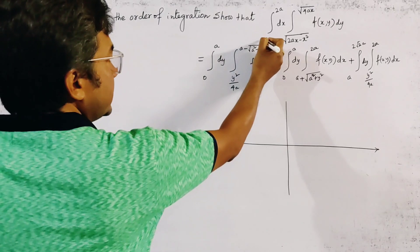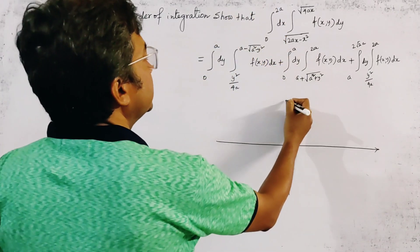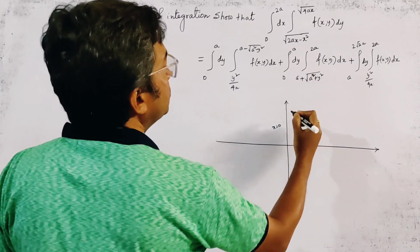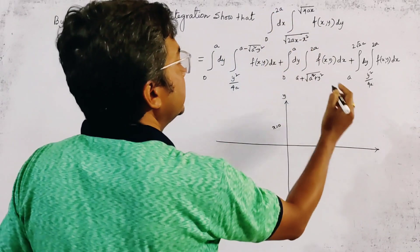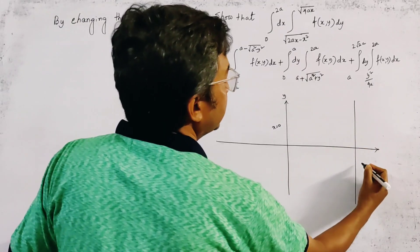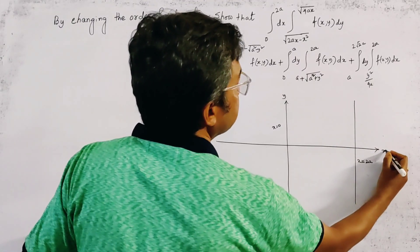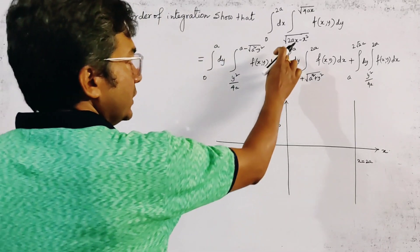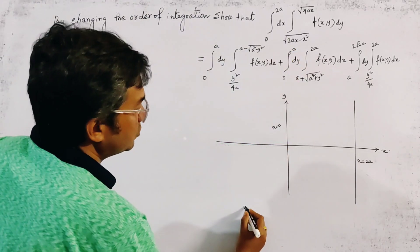The range of x is x = 0 to x = 2a. So x = 0 means the y-axis, and x = 2a is a vertical line. This is the x-axis. Now the lower range of y is √(2ax - x²).